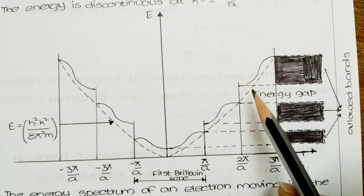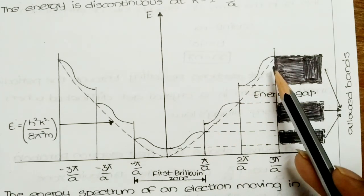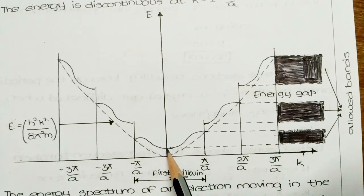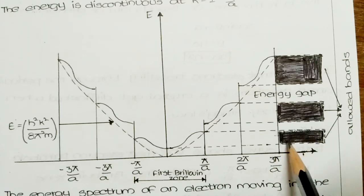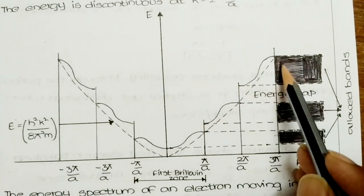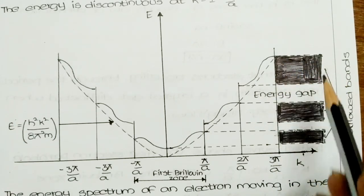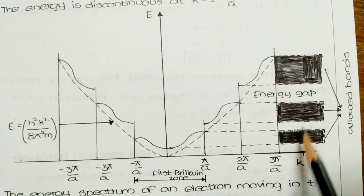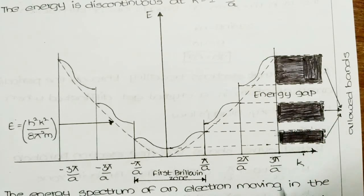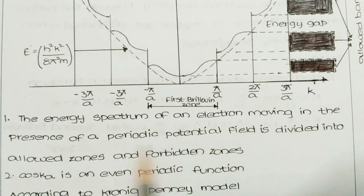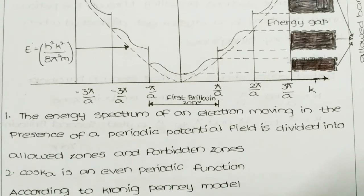The dotted line represents energy. By looking at the dotted line, we generally assume that the energy is continuous, but in this situation the energy is discontinuous. This is why Brillouin zones are forming. The allowed zones are regions where electrons are present. The distance between two allowed zones is called the forbidden energy zone. The energy spectrum of an electron moving in a periodic potential field is divided into allowed zones and forbidden zones.